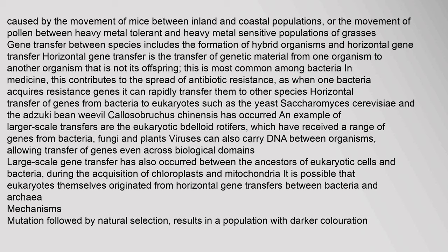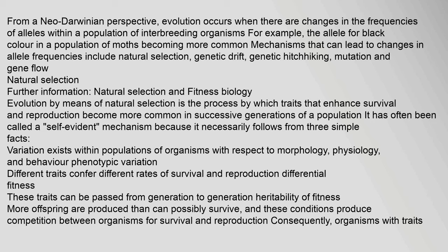Large-scale gene transfer has also occurred between the ancestors of eukaryotic cells and bacteria during the acquisition of chloroplasts and mitochondria. It is possible that eukaryotes themselves originated from horizontal gene transfers between bacteria and archaea. Mechanisms: From a Neo-Darwinian perspective, evolution occurs when there are changes in the frequencies of alleles within a population of interbreeding organisms. Mechanisms that can lead to changes in allele frequencies include natural selection, genetic drift, genetic hitchhiking, mutation, and gene flow.